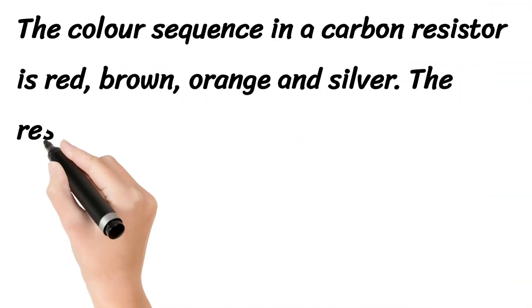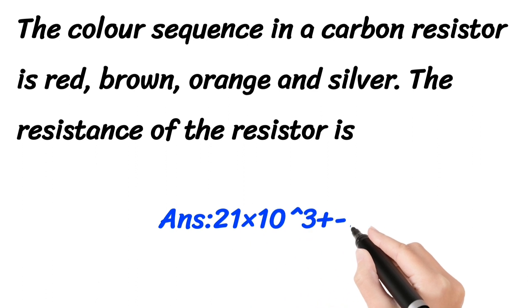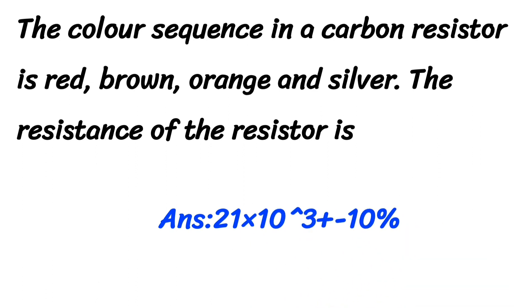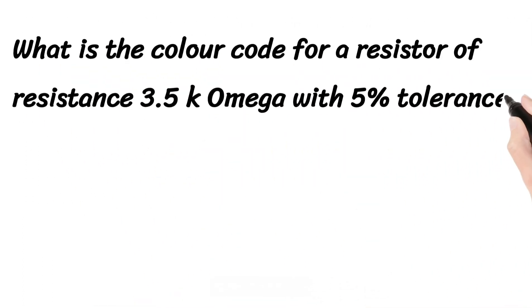We will see two types of questions based on this. In the first type, the color sequence in a carbon resistor is red, brown, orange, and silver. Red represents the number 2 and brown represents the number 1 as the first and second digits respectively. Orange represents the multiplier value of 10 power 3, and silver represents plus or minus 10% tolerance. So the answer is 21 × 10³ ± 10%.